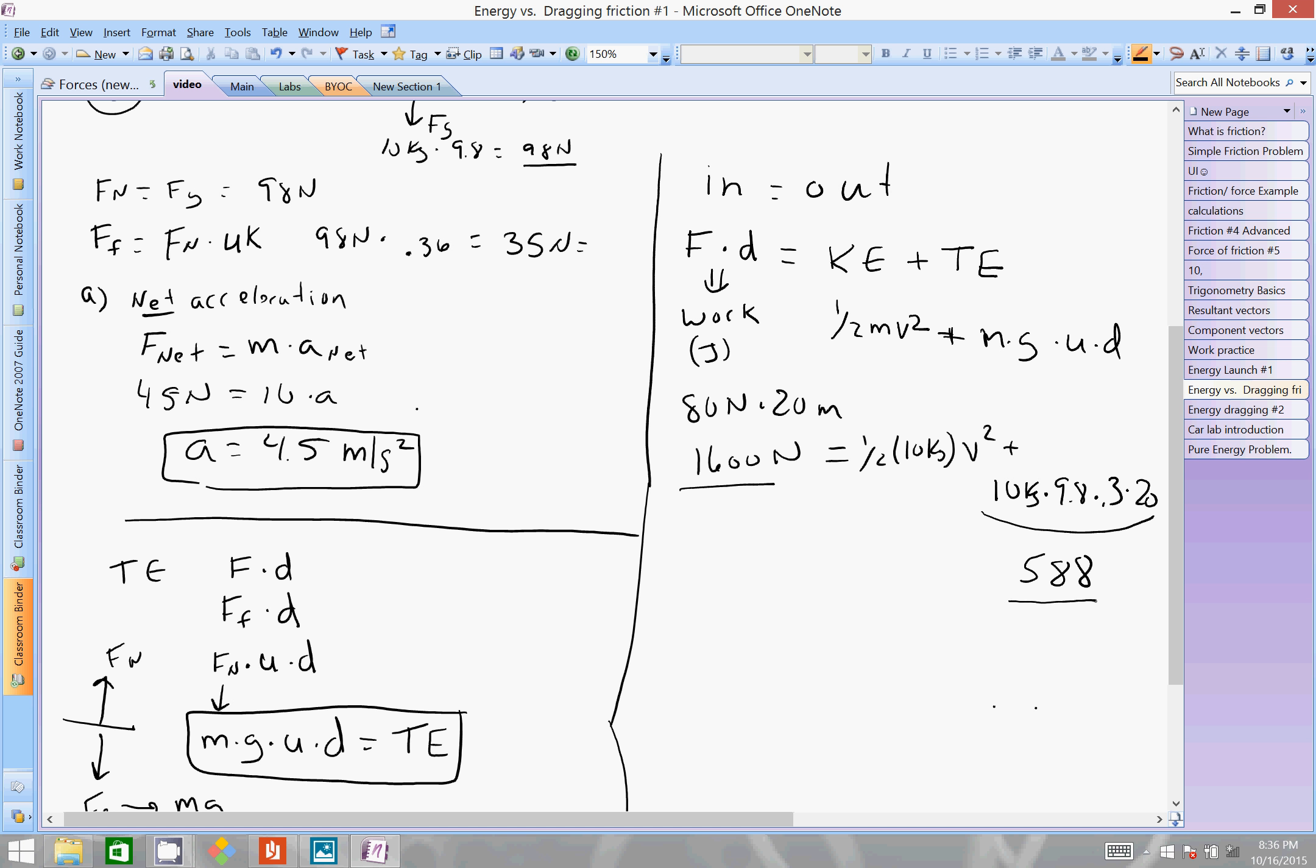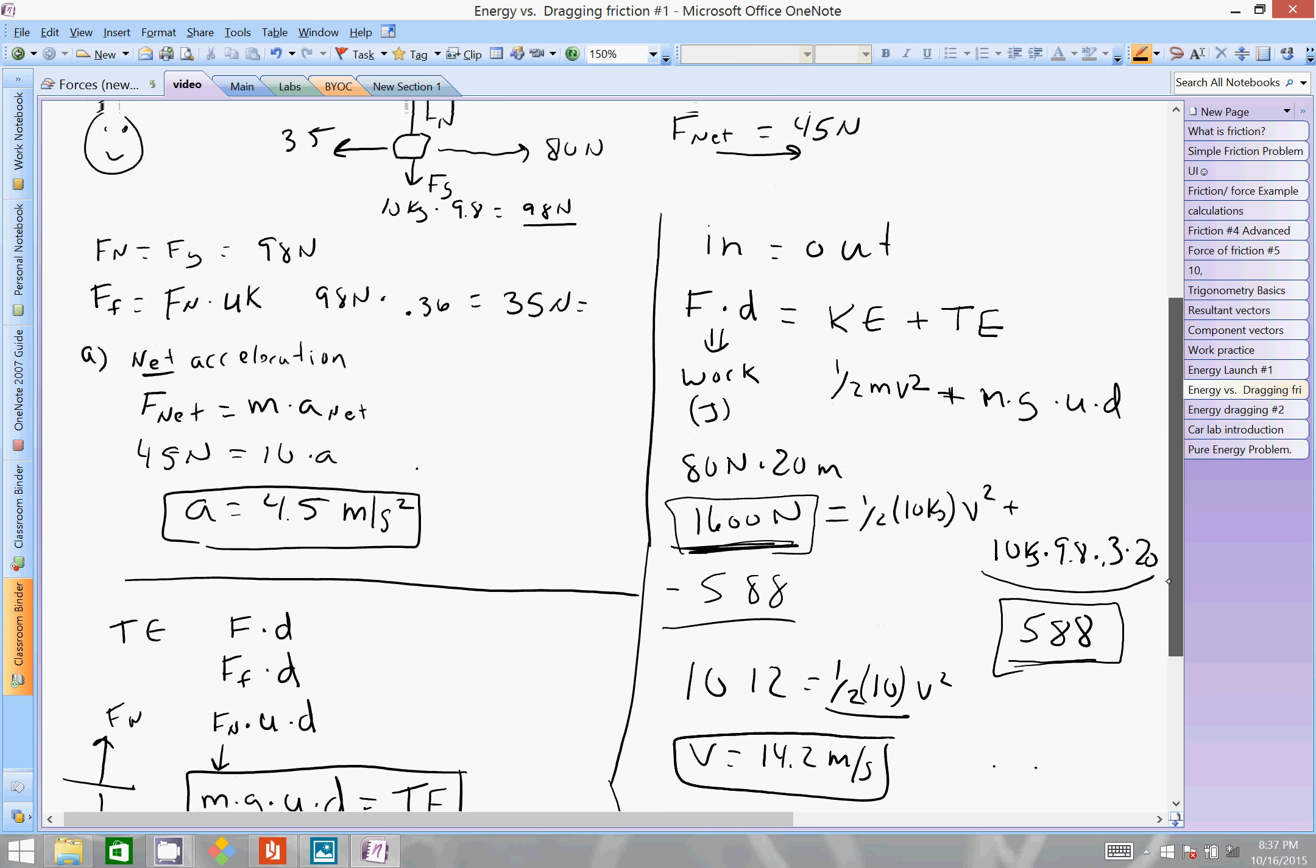So we've got 10 times 9.8 times 0.36 times 20 equals 588. Now, if by chance this number ends up being bigger than this number, what that means, assuming we didn't make a typo, is that the cost of friction is more than what you have actually provided. And you would not have enough energy to actually drag this item that far. And this would be the minimum amount of energy needed to drag it. And at that point, it would have a zero velocity. Either way, subtract this off. And the rest of the energy is free to cause movement. So we have 1012 equals one half 10 kilograms v squared. That's obviously 5. Divide by 5. Square root the answer. And we get the velocity equals 14.2 meters per second.